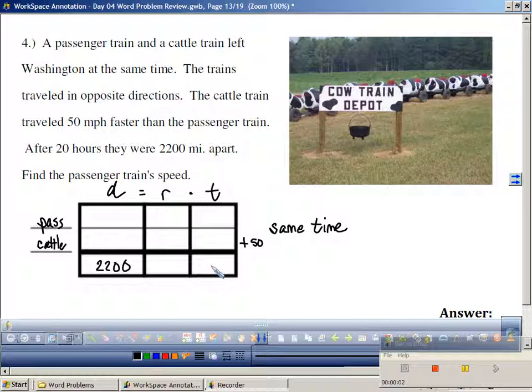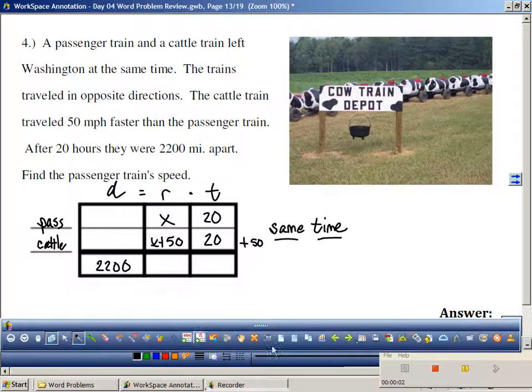Let's label this. D equals R times T. After 20 hours, they were 2,200 miles apart. Where does 2,200 go? Total distance is 2,200. Where does 20 hours go? In the time. Which one? Do we ever have a bottom bottom on these problems? Who drove for 20 hours? Both of them. Why? Because if one of them went 20 hours, so did the other one. Find the passenger train speed. Where am I going to put an X? Under the passenger. What goes here? X plus 50. And you guys can multiply that straight across and total it.